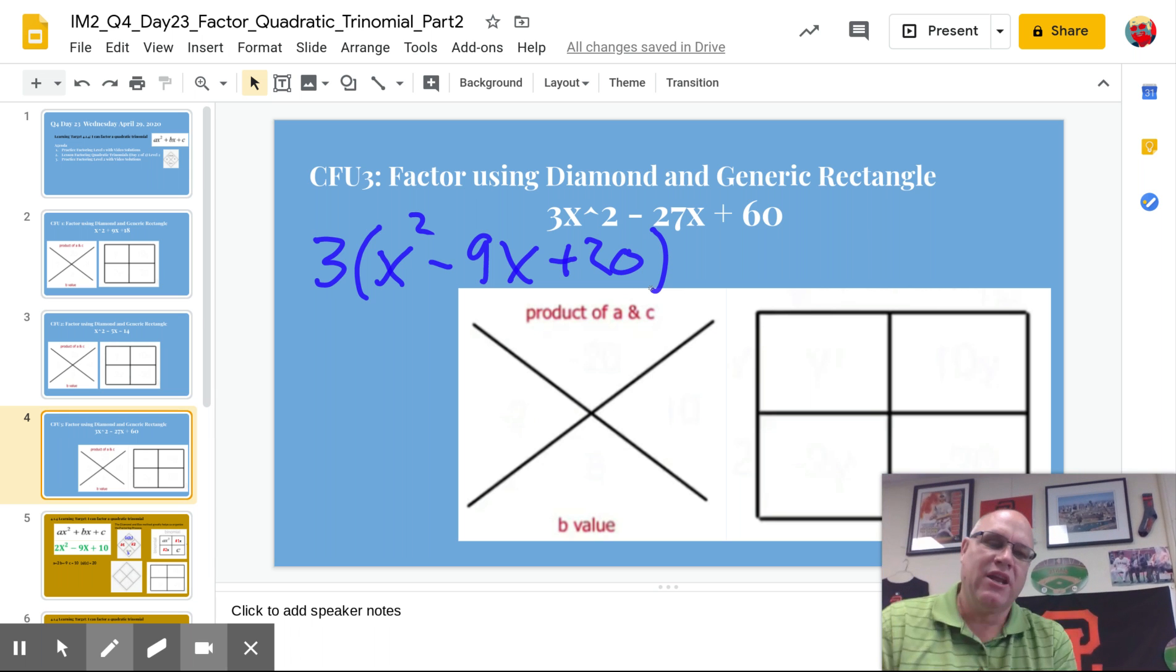All right, so again, you need to remember you always look for GCF first when we're factoring. So in this case, it's an easier problem now that we have an a value that's only 1. So we're going to factor now that quadratic trinomial, the x squared minus 9x plus 20.